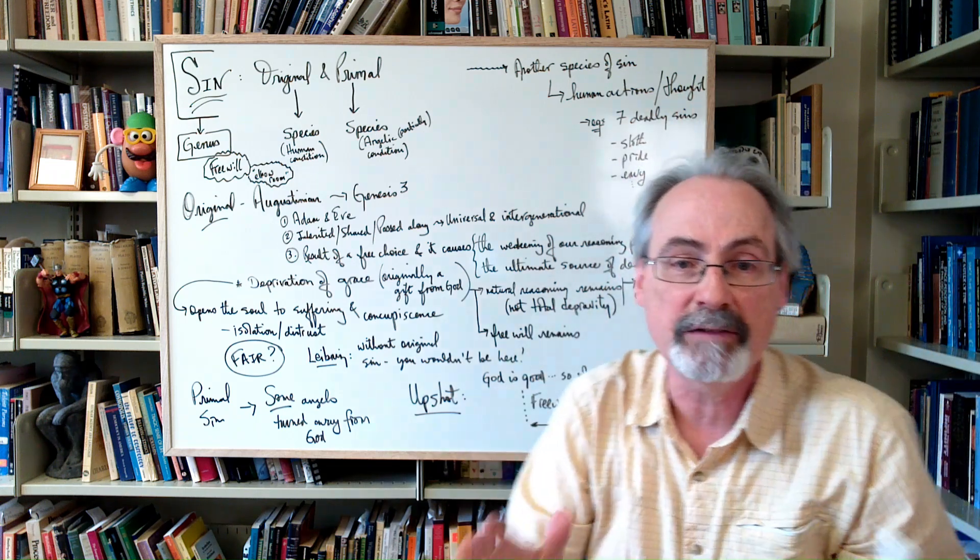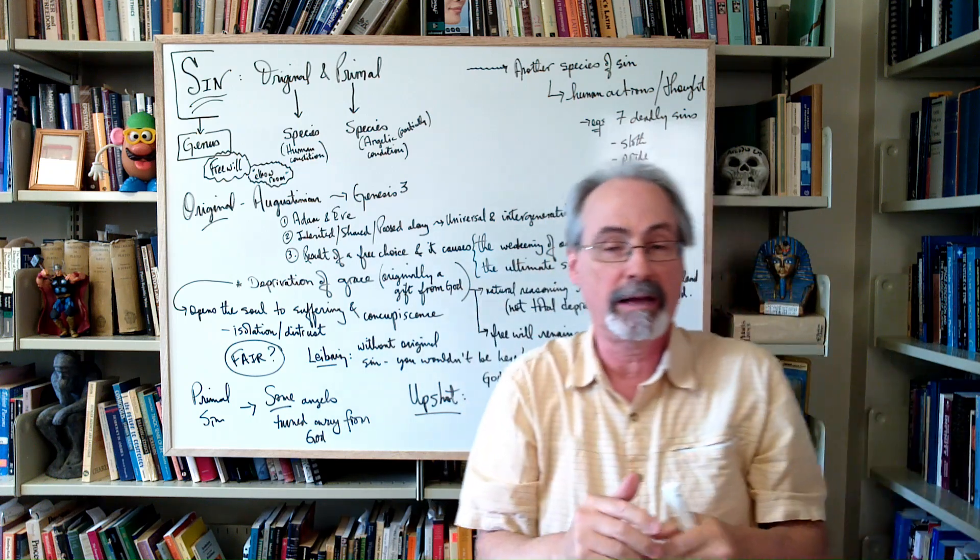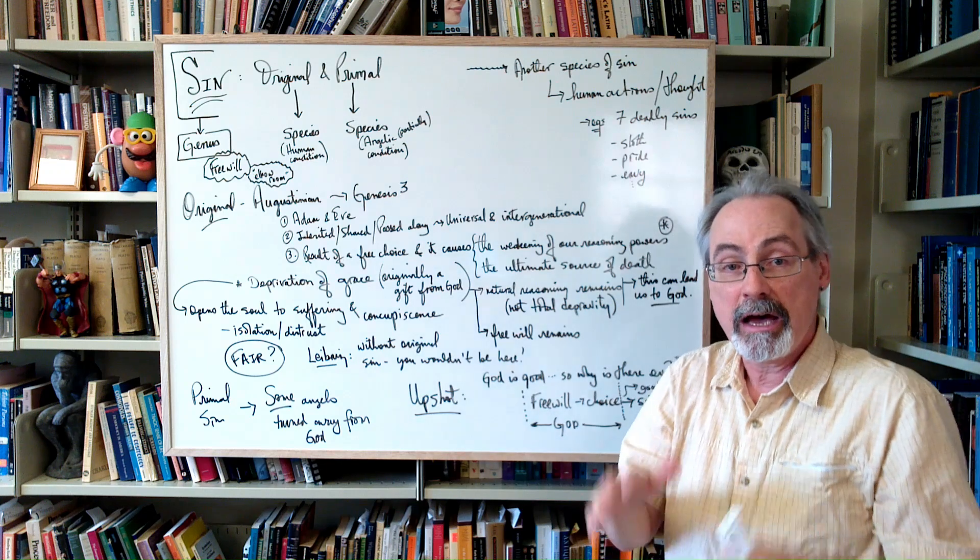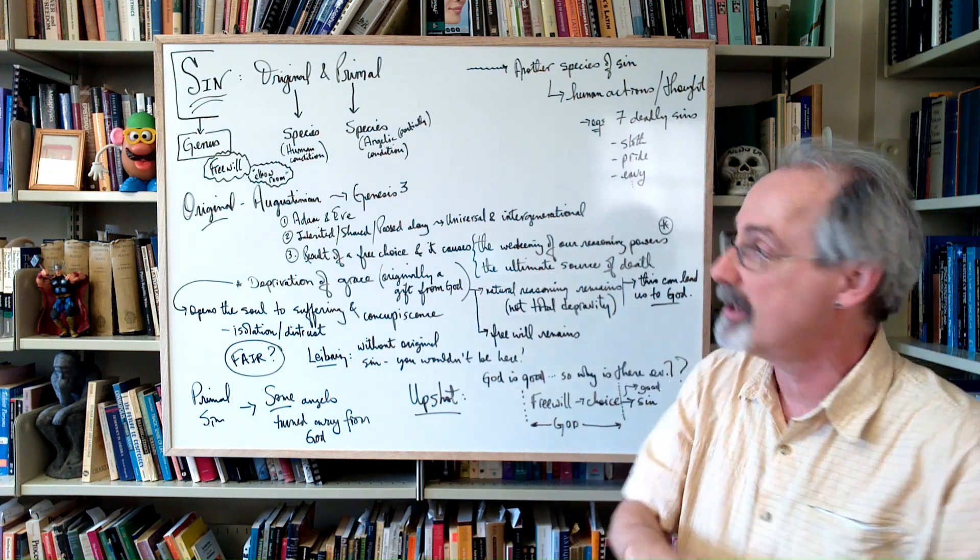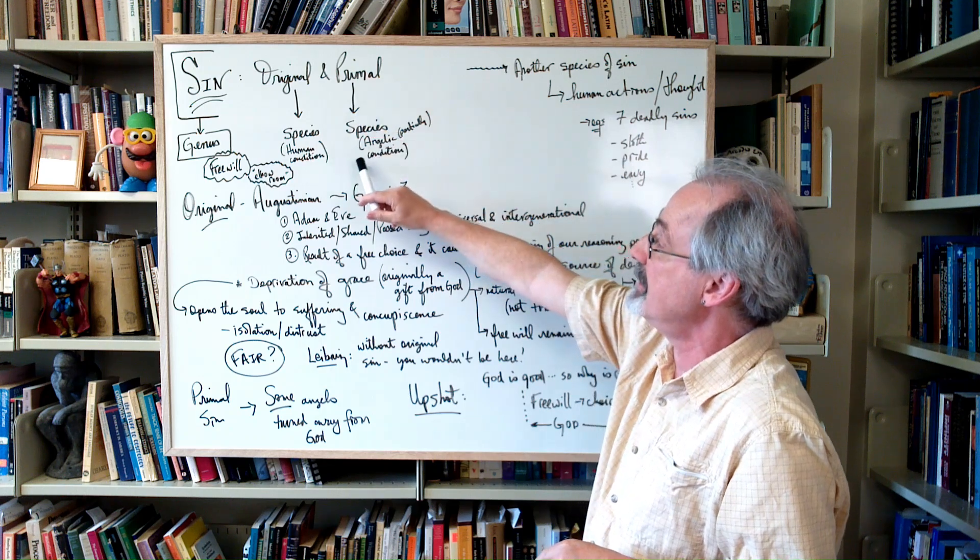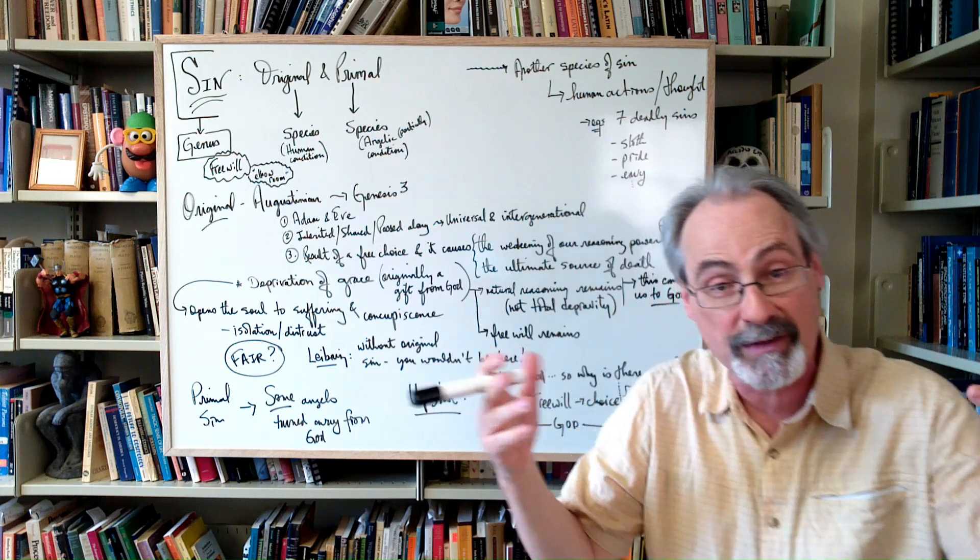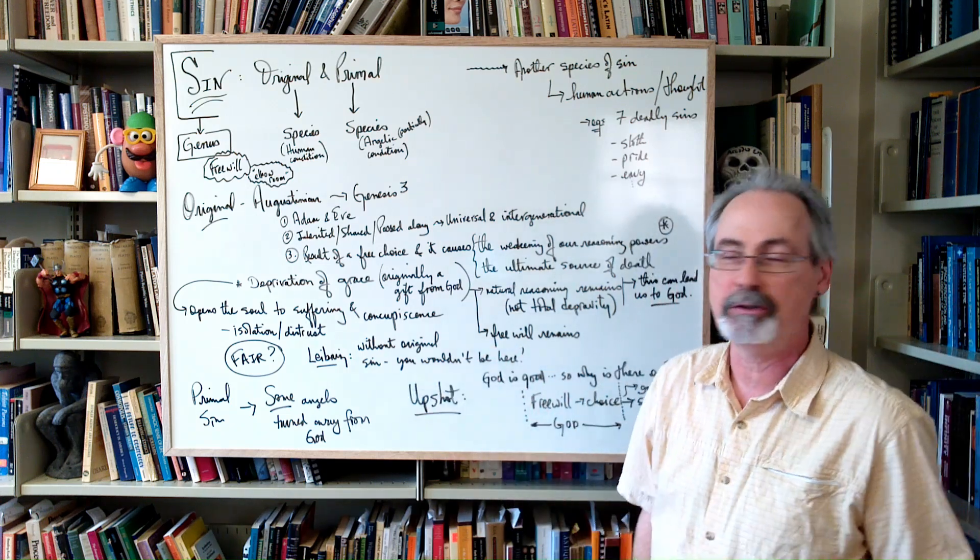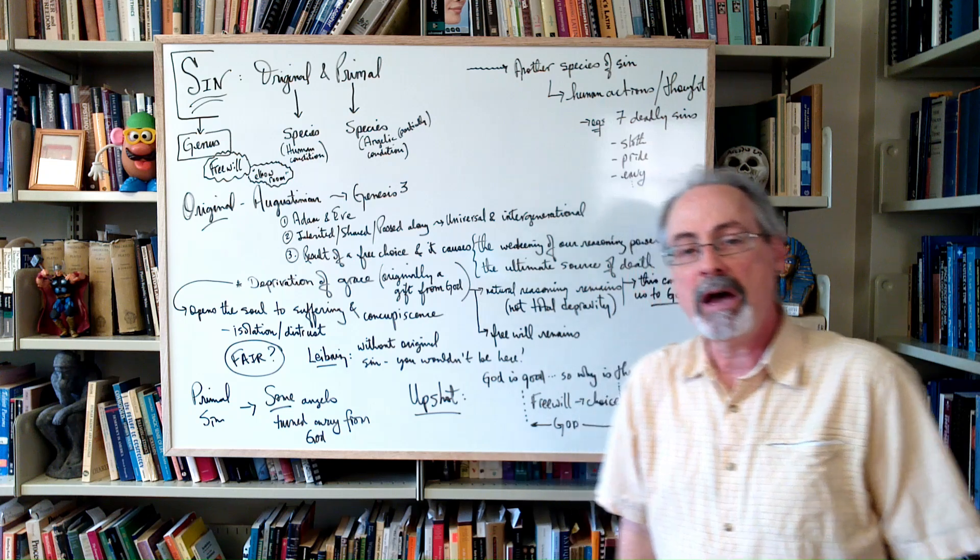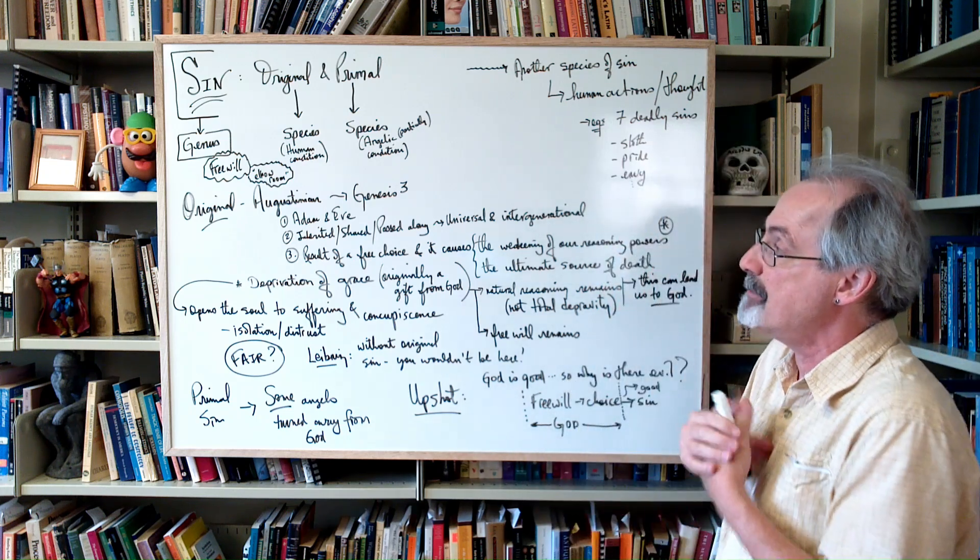What individuals are doing, like actions, whether they're mental actions or externalized physical actions, how those can be sinful - I'm not talking about that. The other species of sin is the big one, the cosmological one. It deals with the angelic condition - primal sin. I'll flesh out a little bit of the details and the differences in a bit.